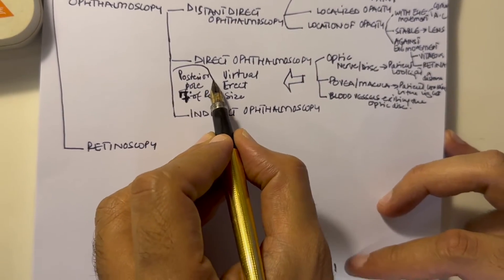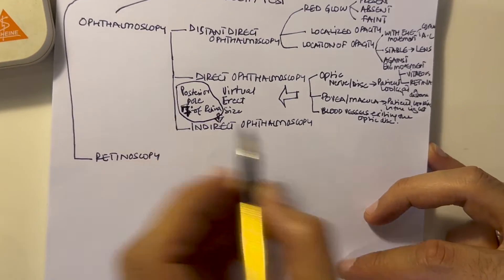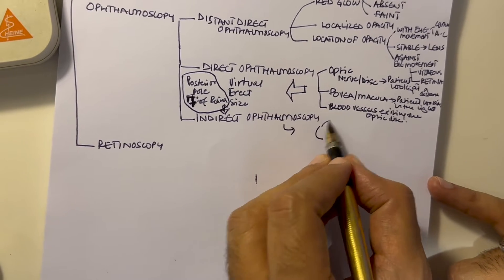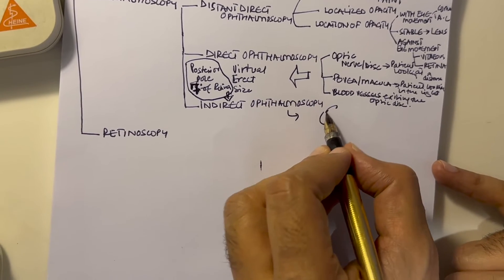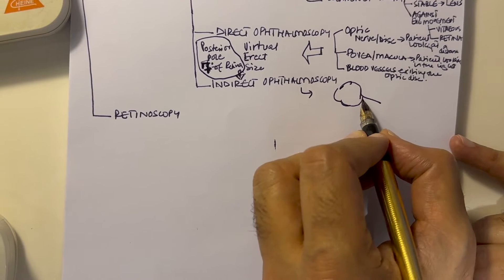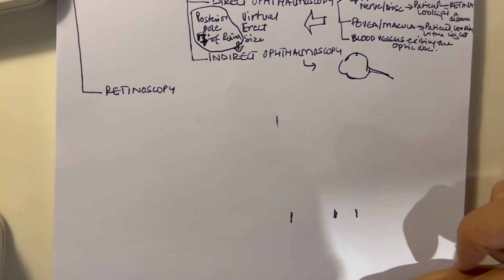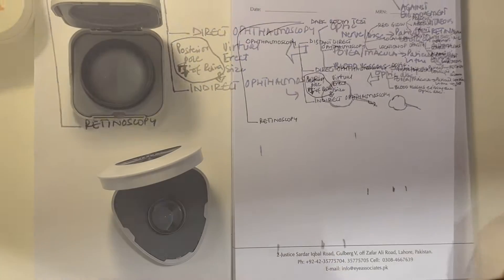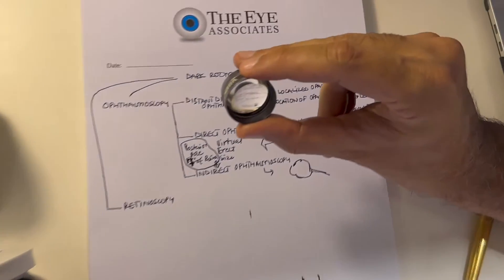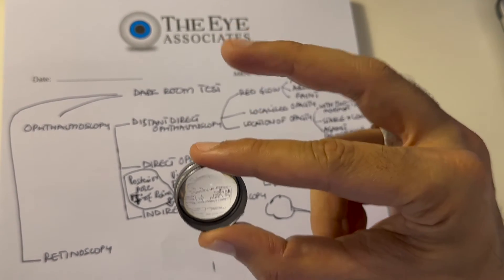The limitation of direct ophthalmoscopy is that you can only see seven degrees of the retina. So if you want to see the whole retina, starting from the ora serrata till the end, you have to do an indirect ophthalmoscopy.